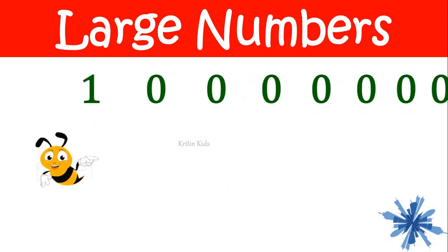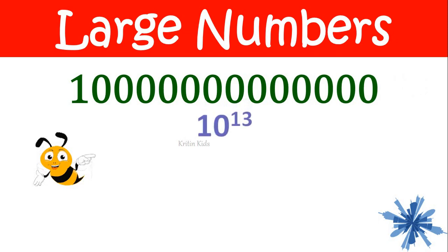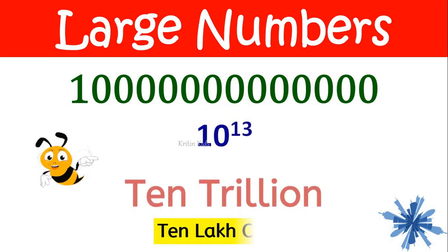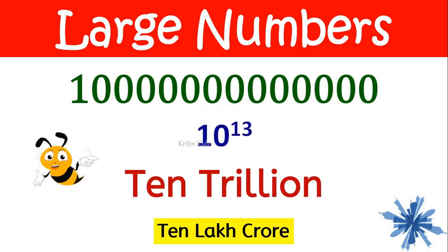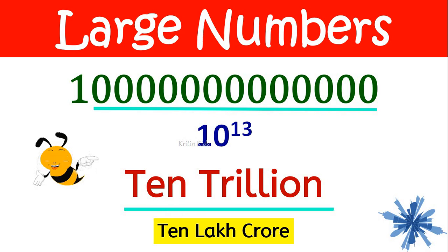Then if I add one more zero here, it becomes ten trillion, that is ten lakh crore. One followed by thirteen zeros gives us ten trillion.